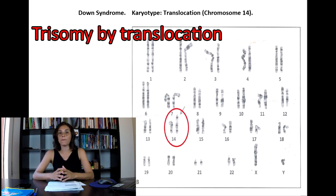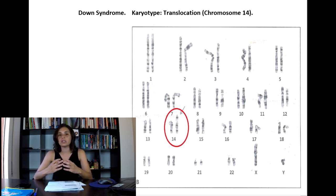The second one is trisomy by translocation. A chromosome translocation is an alteration in the structure of the chromosome characterized by the exchange of segments between non-homologous chromosomes. The non-homologous chromosomes are those that are not members of the same chromosomal pair. In the picture, we have an example of translocation.